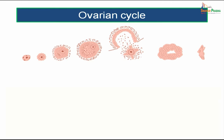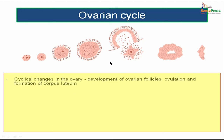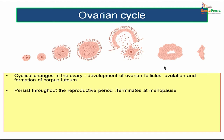Let us see the ovarian cycle first. We can see many follicles undergoing changes in the ovary — maturing, releasing, and finally degenerating. The cyclical changes start with development of ovarian follicles, then ovulation, and finally formation of corpus luteum. This process repeats throughout the reproductive period and terminates only at menopause.